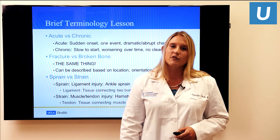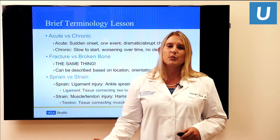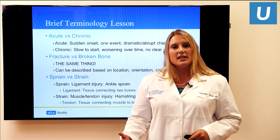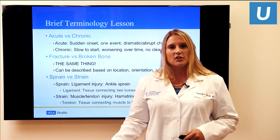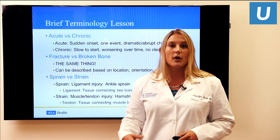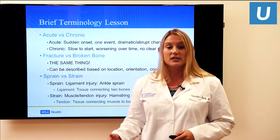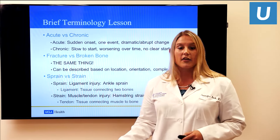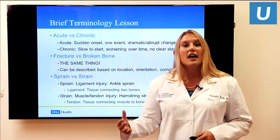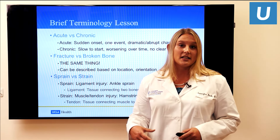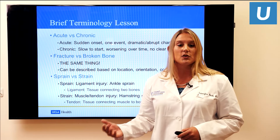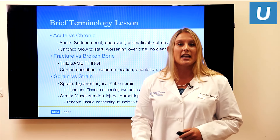Also commonly confused: a sprain versus a strain. A sprain involves a ligament injury — think of an ankle sprain. A ligament is a piece of tissue that connects between two bones. A strain, on the other hand, is an injury to a muscle or a tendon, like a hamstring strain. A ligament connects two bones, whereas a tendon connects bone to muscle. That's the difference between a sprain and a strain.